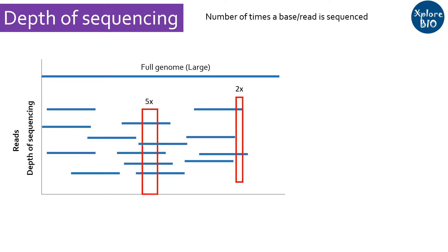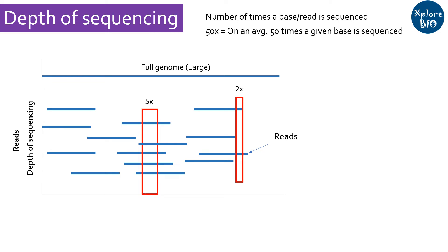For example, if the sequencing depth is 50x, it means theoretically each base of the genome or transcriptome is expected to be sequenced 50 times. Sequencing is usually performed as small or large fragments called reads. Read depth is a similar concept which tells you how many times a particular genomic region is sequenced.